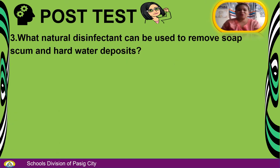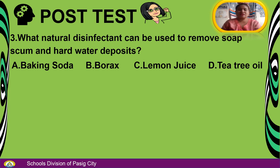Number 3: What natural disinfectant can be used to remove soap scum and hard water deposits? A. Baking soda. B. Borax. C. Lemon juice. D. Tea tree oil. The answer is C — Lemon juice.